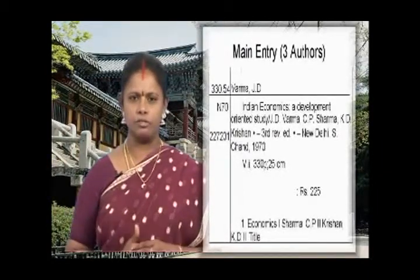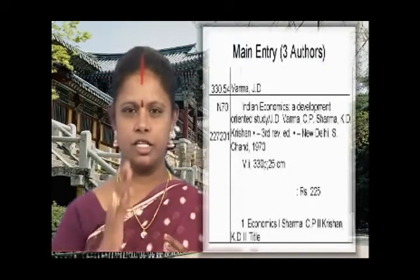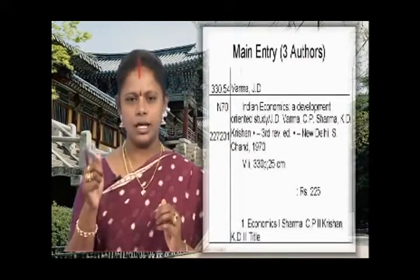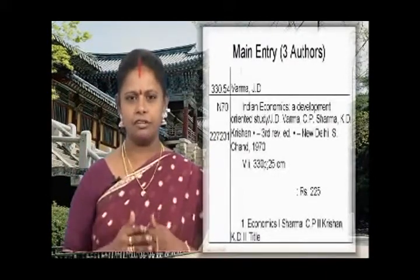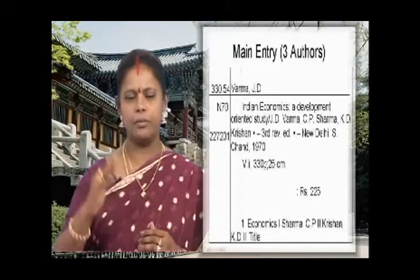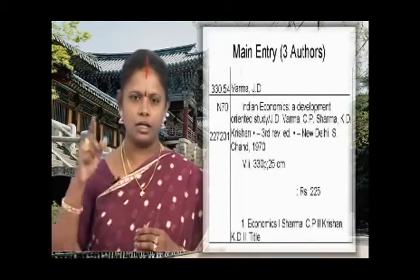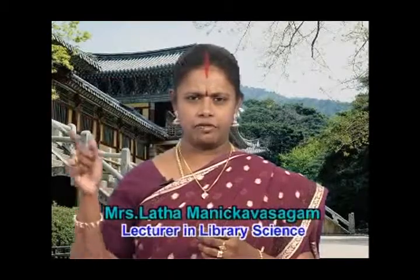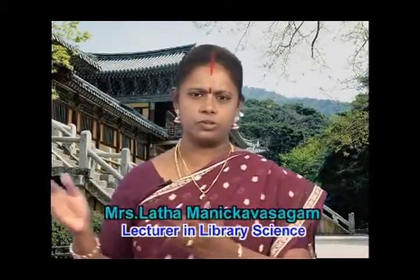Now write the title from the second indention. The title is 'Indian economics' with a subtitle, so copy it down, then a slash. In the statement of responsibility, copy all three authors' names: Varma, comma, then the second author, then the third author. The subsequent statement of responsibility is not given. The edition statement is 'third revised edition,' so write: dot dash, 3rd rev. ed., then place of publication, publisher name, and year.